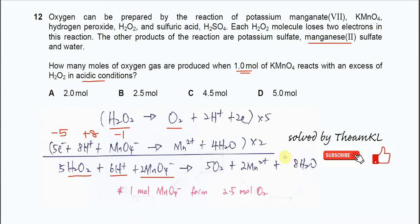In this equation, two moles of MnO4⁻ (manganese VII) produces five moles of oxygen. Since the question asks about one mole of KMnO4, if two moles give five moles of oxygen, then one mole gives 2.5 moles of oxygen. Therefore, the answer is B.